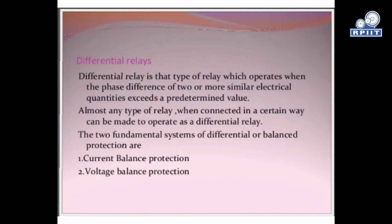First of all, we must understand what a differential relay is. A differential relay is that type of relay which operates when the phase difference of two or more similar electrical quantities exceeds a predetermined value. We can say that a differential relay is the most important type of electrical relay. Whenever there is a difference between electrical quantities like voltage or current — if there are two voltage levels in the same transmission line or device, we can use a differential relay. Similarly, if there is a difference in current, we use a current differential relay.